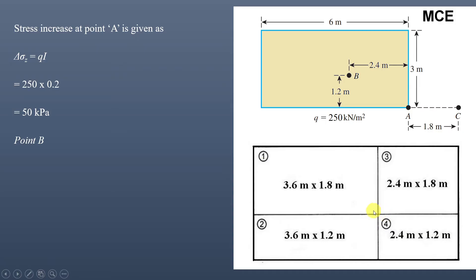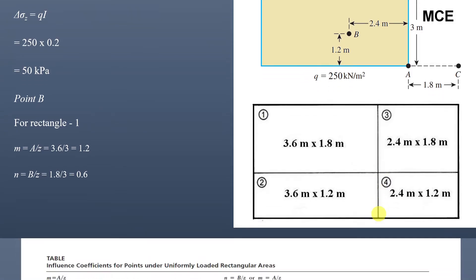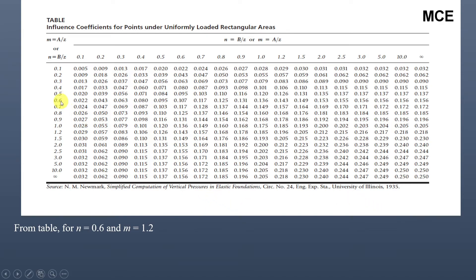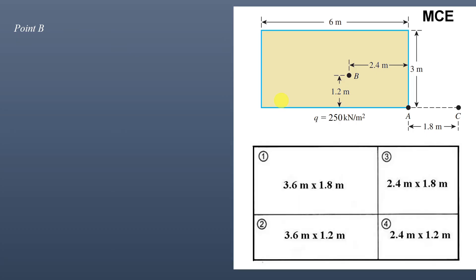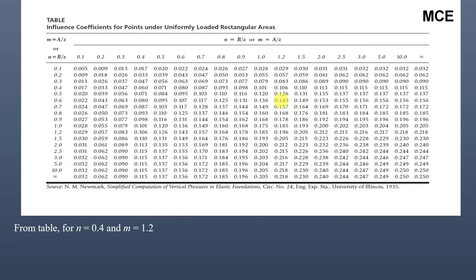For rectangle 1 (3.6 m × 1.8 m): m = 3.6/3 = 1.2 and n = 1.8/3 = 0.6. From the influence coefficient table, for n = 0.6 and m = 1.2, the influence coefficient I₁ = 0.143. For rectangle 2 (3.6 m × 1.2 m): m = 3.6/3 = 1.2 and n = 1.2/3 = 0.4. From the table, for n = 0.4 and m = 1.2, the influence coefficient I₂ = 0.106.